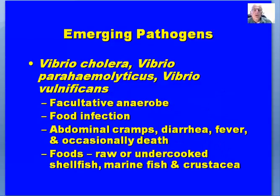Vibrio cholerae, parahaemolyticus, and vulnificus are facultative anaerobes that cause food infection. Typical symptoms include abdominal cramps, diarrhea, fever, and occasional death. Cooking will destroy these Vibrio species fairly easily.